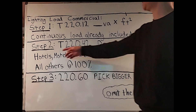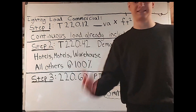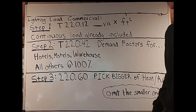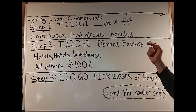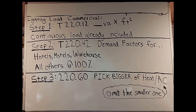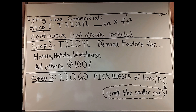Now we're going to step two. We have table 220.42, which has demand factors for hotels, motels, and warehouses. All other occupancies are at 100%, as shown in that same table where we have demand factors for dwelling units. Then step three comes from article 220.60, which tells us to pick the bigger of heat or AC and omit the smaller one. So if heat is bigger, we use that number and we don't use the AC number.